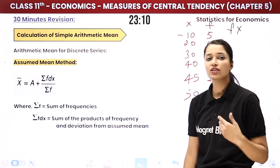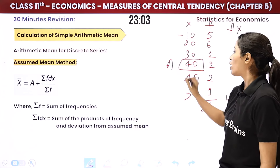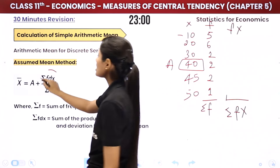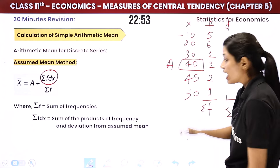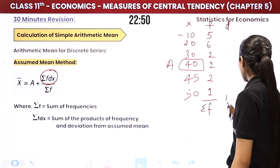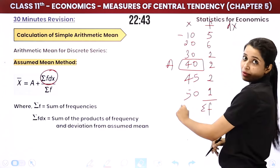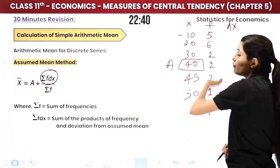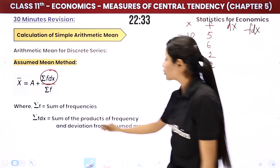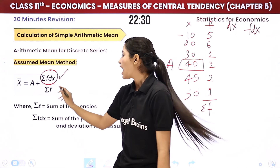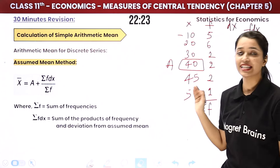Then we come to assumed mean method for discrete series. Again, we assume one value as the mean — for example, let's assume 40 is the mean, so A = 40. Then you need Summation of fdX. First, calculate your deviations (X minus A), then multiply each deviation by its frequency f to get fdX. Sum all fdX values to get Summation of fdX, then divide by Summation of f. This is the assumed mean method for discrete series.